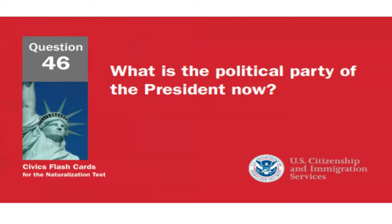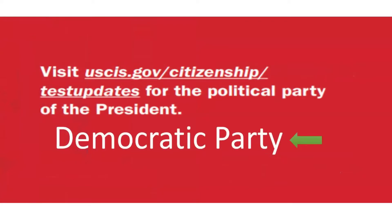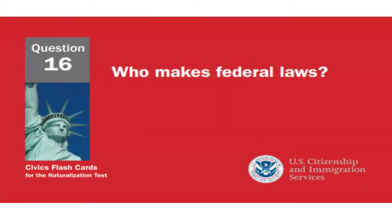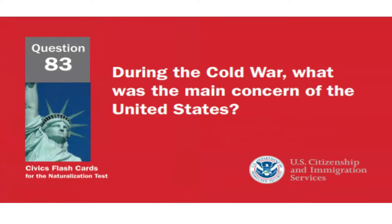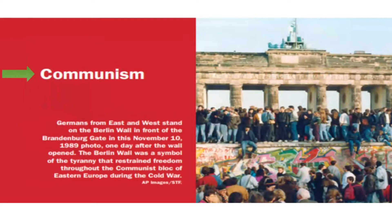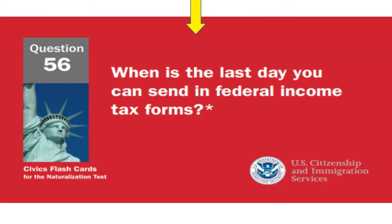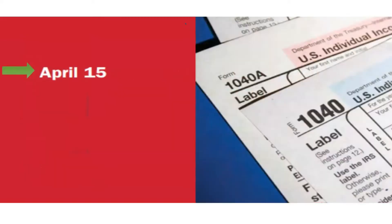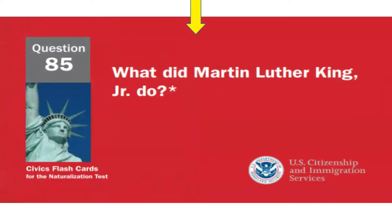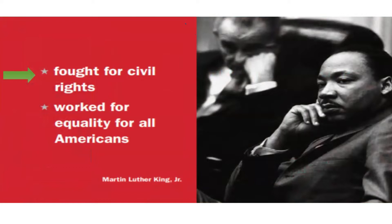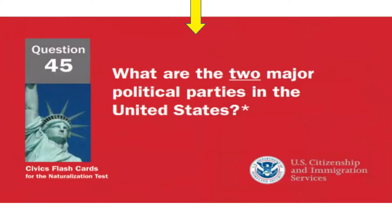What is the political party of the president now? Democratic Party. Who makes federal laws? Congress. During the Cold War, what was the main concern of the United States? Communism. When is the last day you can send in federal income tax forms? April 15th. What is the highest court in the United States? The Supreme Court.